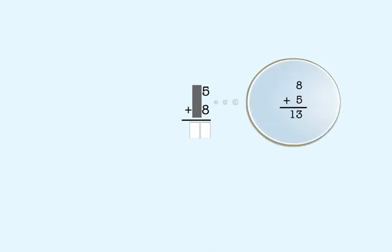13 is two digits. But we can only put one digit in the ones place in the answer. So we put the 3 from 13 in the ones place, and we store the 1 for the 1 ten in 13 here.